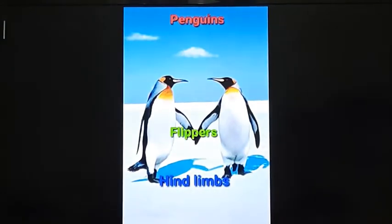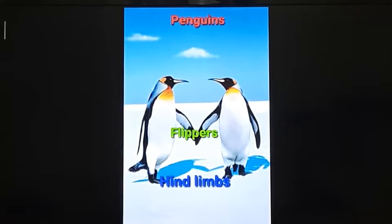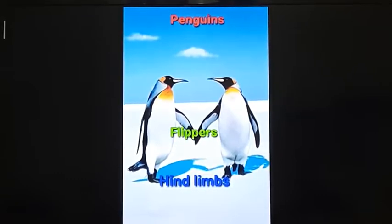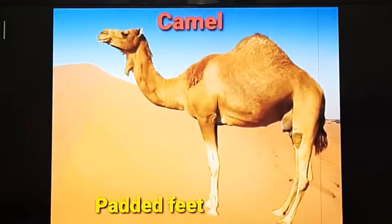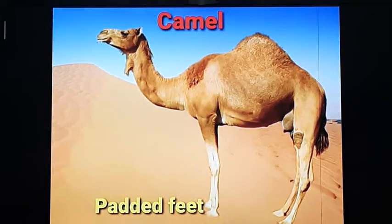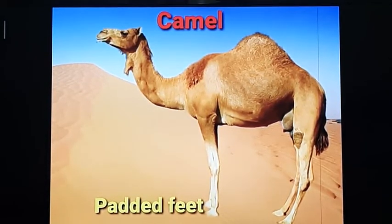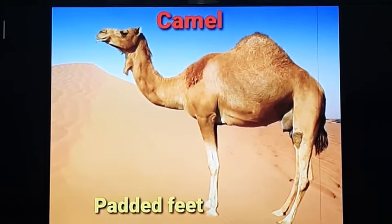Penguins also have two pairs of limbs. Their hind limbs are quite short, due to which they can walk on snow and on the ground. Their forelimbs are called flippers, and due to these flippers they can swim in water. Camels have long legs and padded feet. Due to its padded feet, a camel can walk and even run in the sand of the desert.